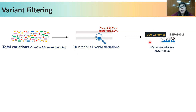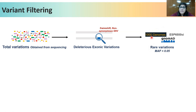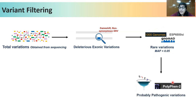Next, we look only at variations that are very rare in population databases such as 1000 Genomes, ESP6500, and NOMAD, because if a particular variation is common in the population, there are very low chances it can result in a deleterious phenotype. This minor allele frequency threshold of less than 0.05 is not constant — it can vary with the prevalence of the disease in question. One can also take clues from computational prediction tools such as SIFT and PolyPhen to assign probable pathogenicity scores.